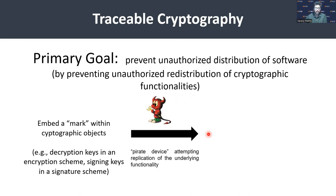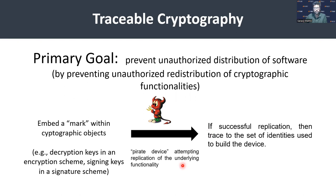There is a pirate device which is attempting replication of the underlying functionality. The security requirement is: if such a successful replication is achieved, then we should also be able to successfully trace back to the set of corrupt identities that were used to build this device.